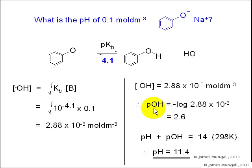pOH is then minus log of this, which gives 2.6, and pH is 14 minus this, which is 11.4.